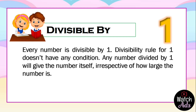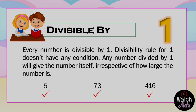Let's have examples: 5 is divisible by 1, 73 is divisible by 1, and 416 is divisible by 1. Because 5 divided by 1 is 5, 73 divided by 1 is 73, and 416 divided by 1 is 416. So divisibility by one also gets a yes.